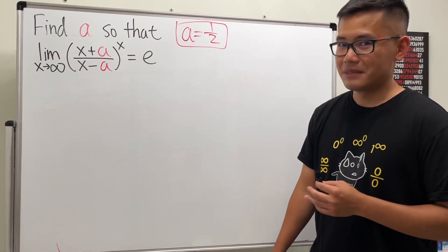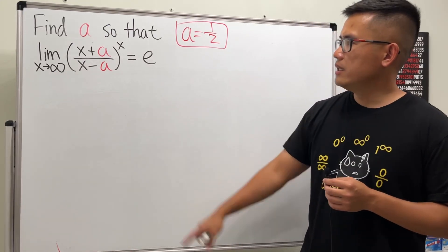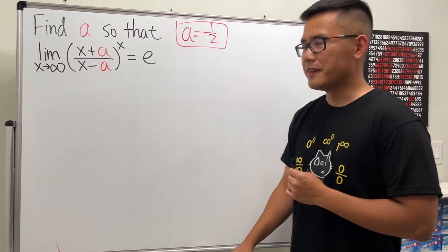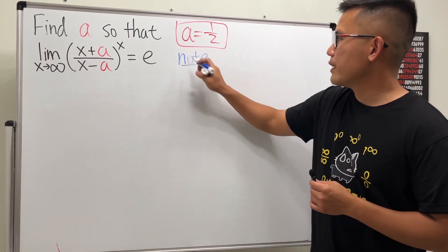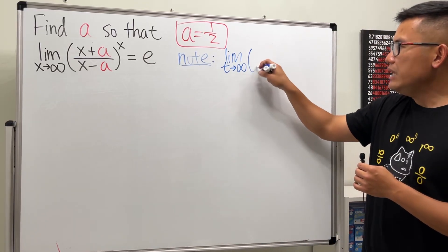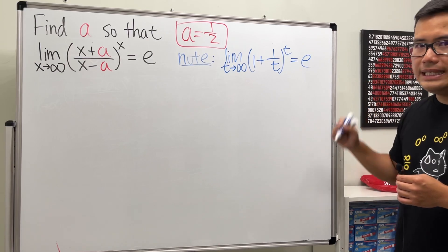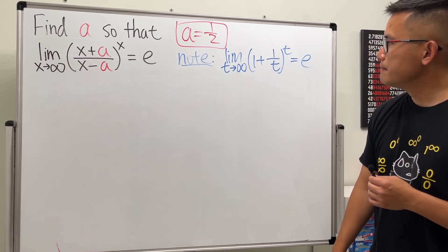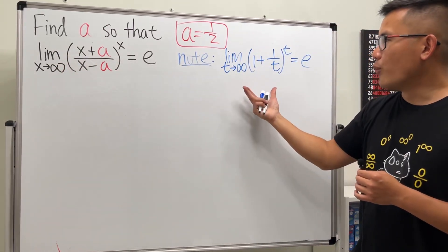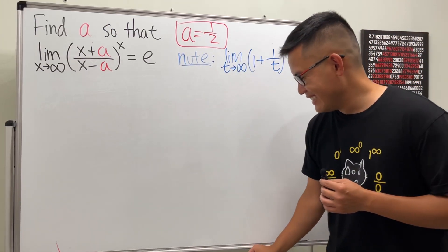Let me show you how I approach this. We have the limit as x approaches infinity, and it equals e. I want to look at the definition of e in terms of a limit. Note: if we have the limit as t approaches infinity of one plus one over t, raised to the t-th power, this gives us the number e. My goal is to somehow break our expression apart to match this form, and that will give us information to figure out what a is.